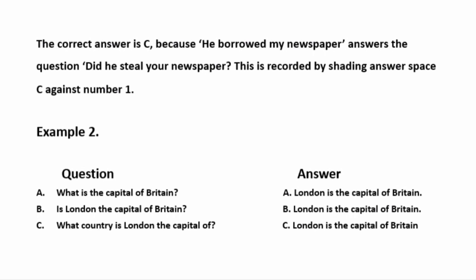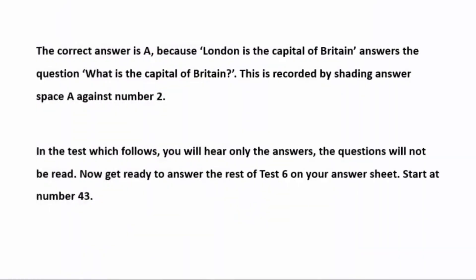Example 2. A: What is the capital of Britain? — London is the capital of Britain. B: Is London the capital of Britain? — London is the capital of Britain. C: What country is London the capital of? — London is the capital of Britain. The correct answer is A because 'London is the capital of Britain' answers the question 'What is the capital of Britain?' This is recorded by shading answer A against number 2. In the test which follows, you will hear only the answers. The questions will not be read. Now get ready to answer the rest of Test 6 on your answer sheet. Start at number 43.